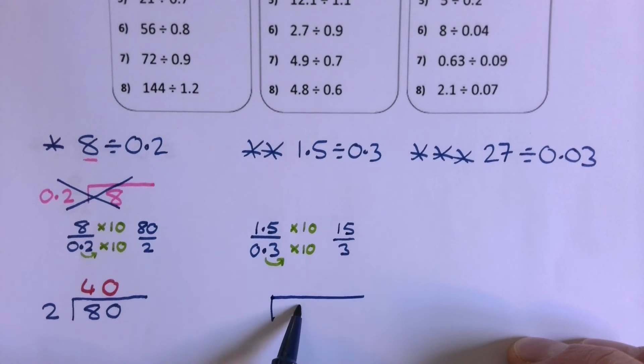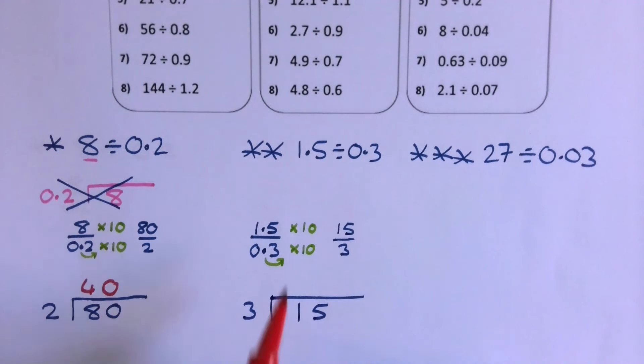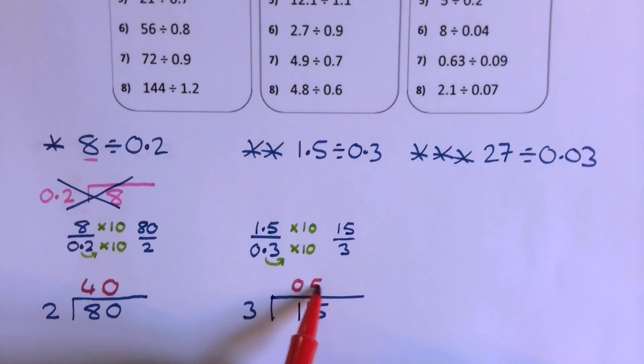So I've got 15, I want to divide it by 3. 3s into 1 don't go, carry the 1, 3s into 15 go 5 times. The answer is 5.